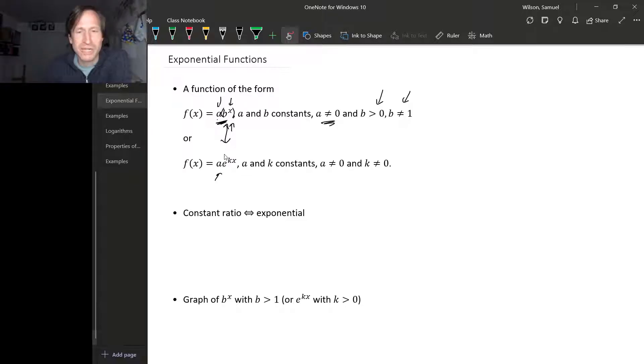We'll talk more about that later. The characteristic feature of an exponential function is that subsequent values always have a constant ratio. For example, if we take one of these functions, a times b to the x, and we evaluate it at two numbers,